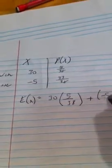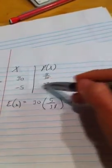So your expected value is just how much you're going to win times the probability of winning, plus how much you would lose times the probability of losing. So it's this times this plus this times this.